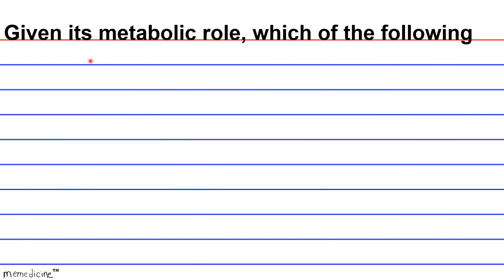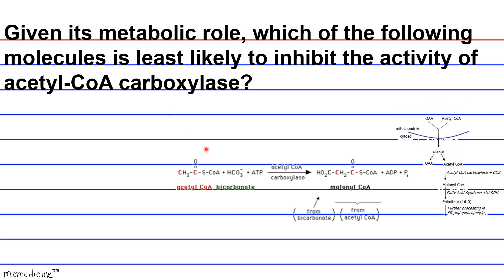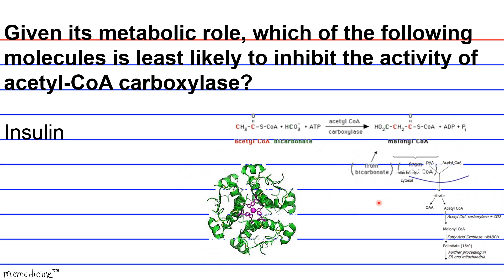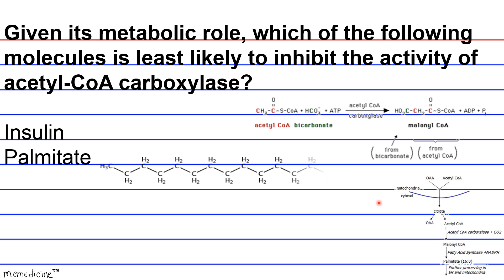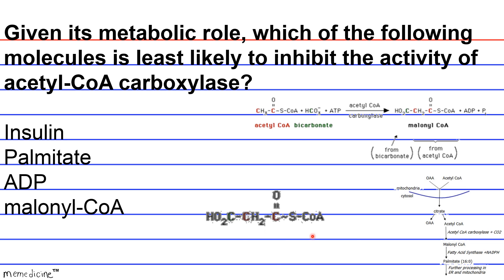Given its metabolic role, which of the following molecules is the least likely to inhibit the activity of acetyl-CoA carboxylase? And when I say its metabolic role, I mean the role it plays in palmitate, or fatty acid synthesis, specifically combining bicarbonate to an acetyl-CoA to yield malonyl-CoA. So is it going to be A: insulin; B: palmitate; C: ADP; or D: malonyl-CoA? You decide. I'll give you a moment to think.